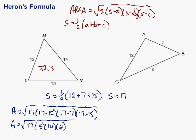Multiply all those things together: 17 times 5 times 10 times 2 gives me the square root of 1700. Then I just need to take the square root of that, which gives me approximately 41.2. So the area of this triangle is 41.2.